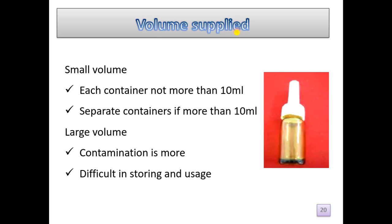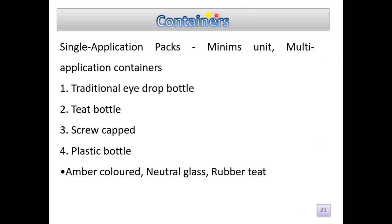Regarding volume supplied: for small volumes, each container should hold not more than 10 ml, and separate containers are used if more than 10 ml is needed. For large volumes, contamination risk is higher and storage and usage are more difficult, so eye drops should be supplied in small volumes of not more than 10 ml. For containers, single-application or multi-application containers can be used, such as the traditional eye drop bottle, teat bottle, screw cap bottle, or plastic bottle. The container should be amber-colored, made of neutral glass or with a rubber teat.